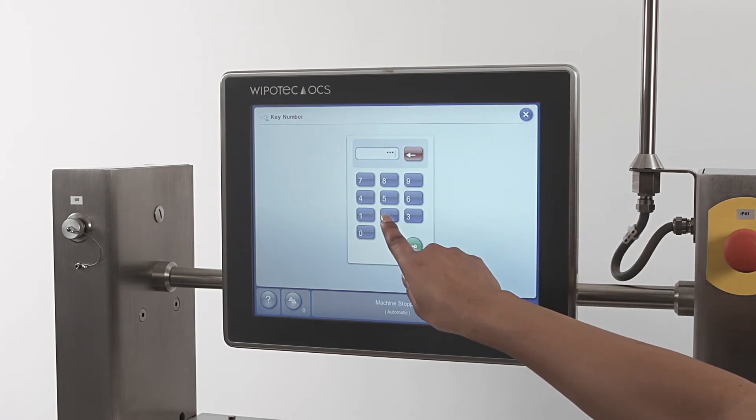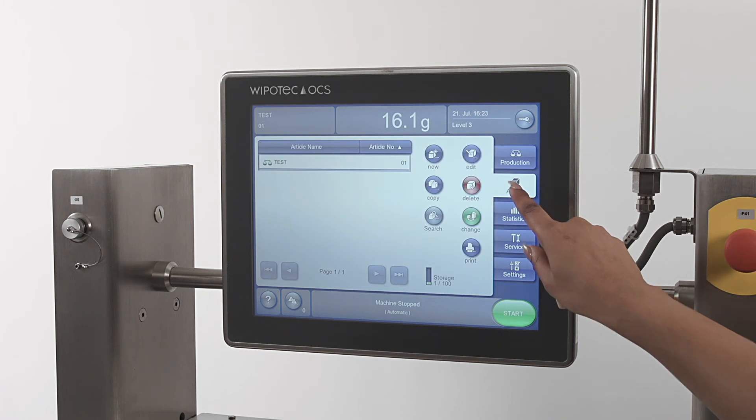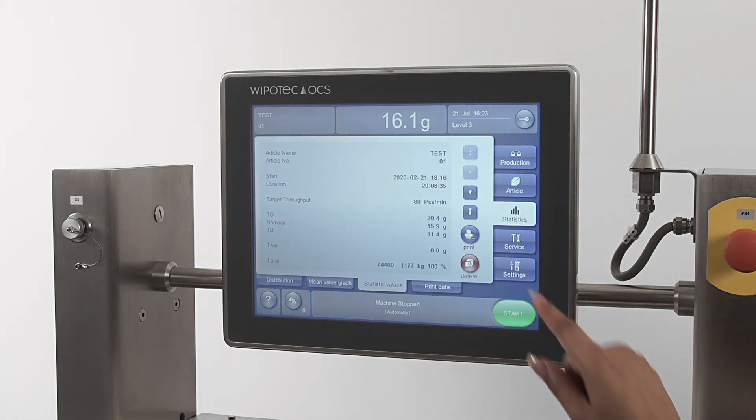Password: there are multiple security levels depending on your level of access. Production: provides current status and activity totals for your checkweigher operations. Article: menu screens for setting up the product related functions of the machine such as over and underweight measurement parameters. Statistics: screens related to the production run history and how essentially well your filling line is operating are located here.